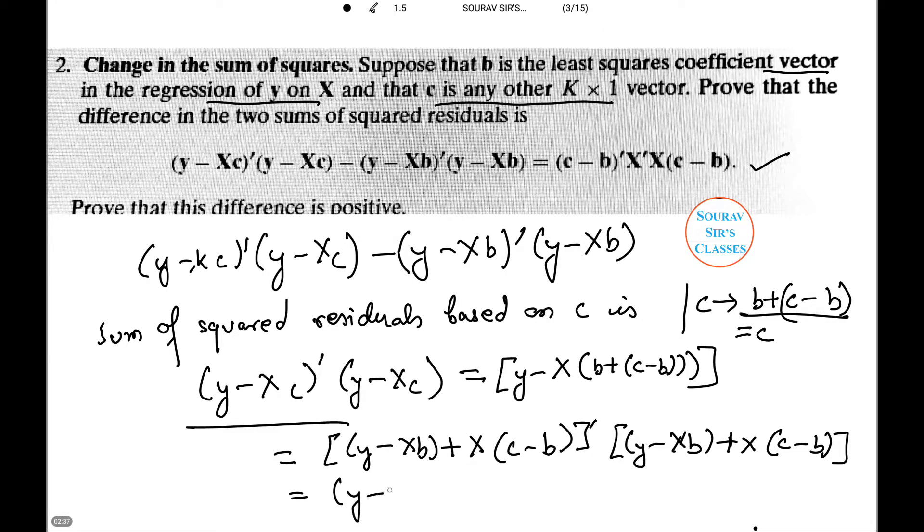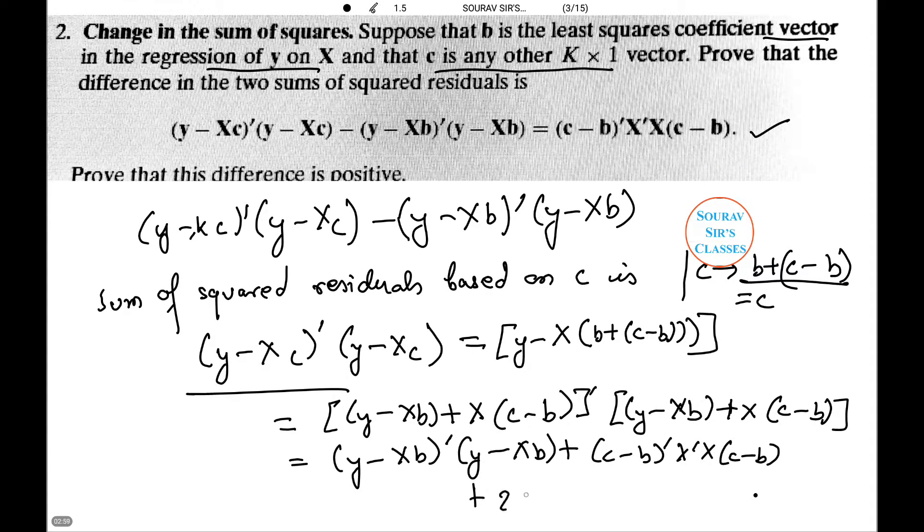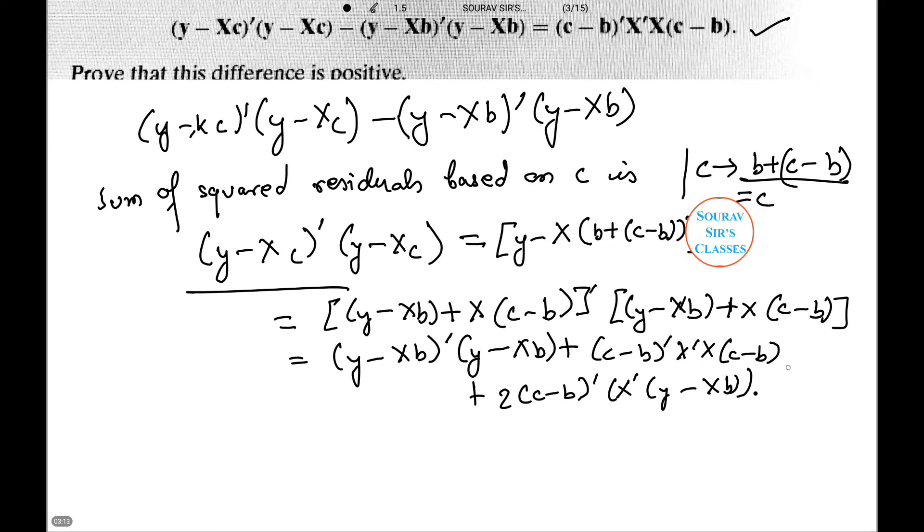And that equals (y - Xb)' (y - Xb) plus (c - b)' X' X (c - b) plus 2(c - b)' X' (y - Xb). But the third term, which is this one, is equal to zero. I'll explain you why. 2(c - b)' X'y - X'Xb, which is nothing but 2(c - b)' X'e, which we know is zero.